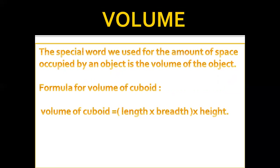The volume of the cuboid depends on length, breadth, and height. In our previous lecture we learned about the area of the rectangle, which only needs length and breadth. But for the volume of the cuboid we also need height. Volume is the special word used for the amount of space occupied by an object. The formula is: volume equals length multiplied by breadth multiplied by height. Length is horizontal, breadth is the side, and height is the vertical length of the cuboid.